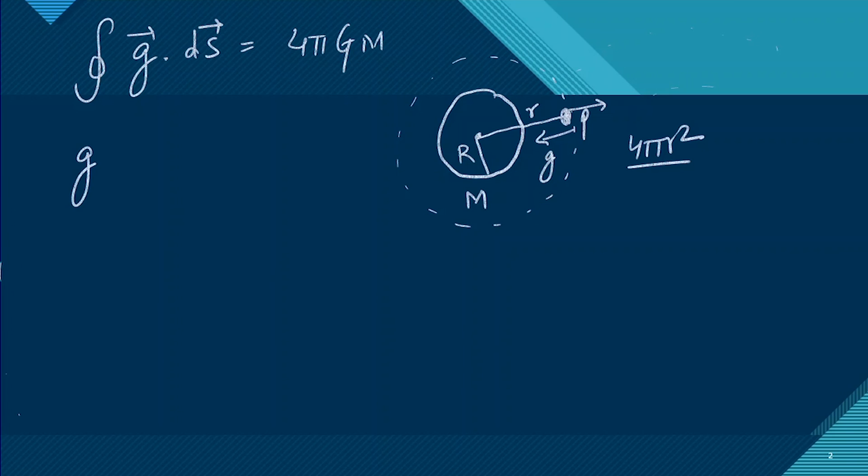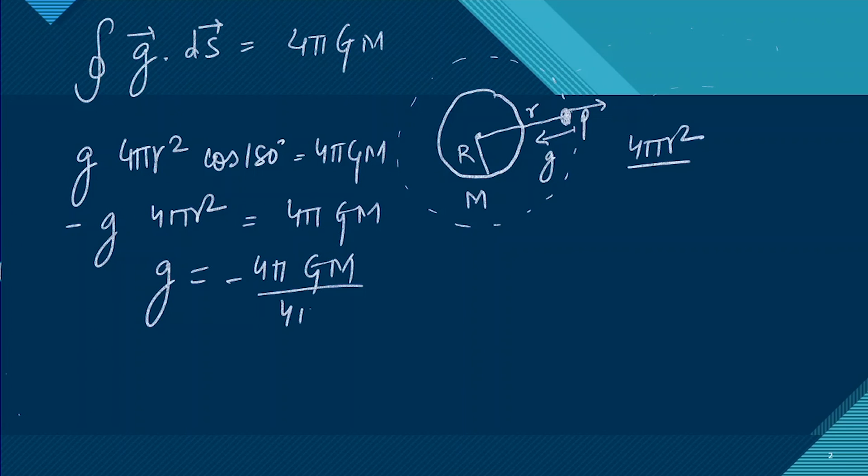So we have to find g. The area of the Gaussian surface is 4πr², and both are opposite, therefore cos will be 180, which equals 4πGM. So this is 4πr² times negative because of cos 180, equals 4πGM. So the gravitational field will be equal to minus 4πGM divided by 4πr². The 4πs cancel out, so this is minus GM/r². This is the gravitational field.